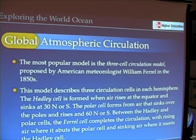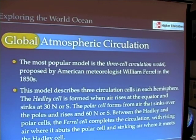Air sinks over the poles, then rises at around 60 degrees north and south. Between the Hadley cell and the polar cell is what's called the Ferrel cell, which completes the circulation as these three cells interact with each other.